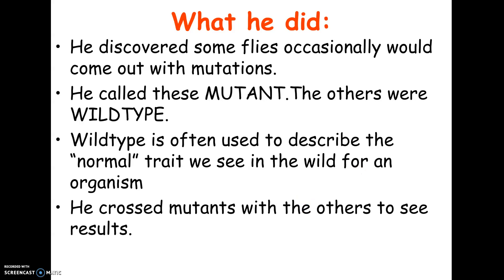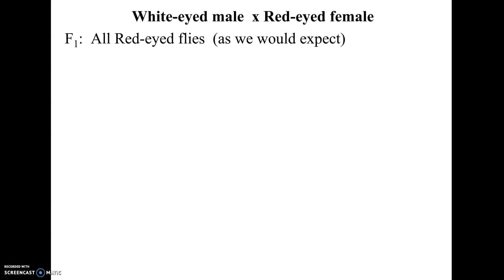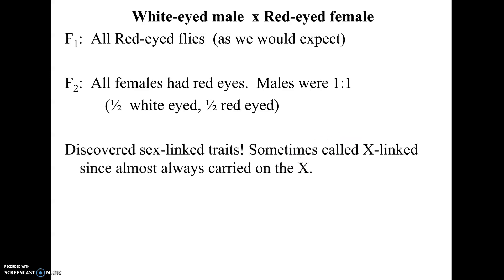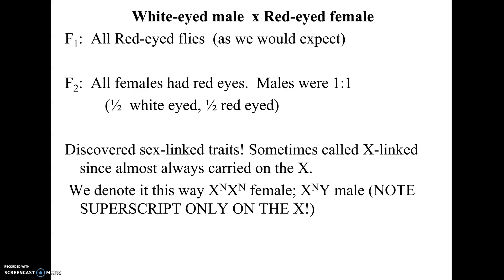Morgan would cross mutant flies with wild types to see how traits were passed on. He crossed a white-eyed male fly (the mutant) with a red-eyed wild type female. The F1 offspring all had red eyes, telling us red was dominant to white. But when he crossed the F1s, he saw something strange: all females had red eyes, but about half the males had white eyes and half had red eyes — only males showed white eyes.